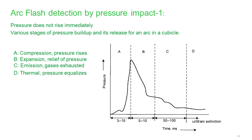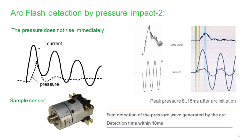The pressure increase in the cell takes some time. On the right-hand side, when we increase the current, the maximum pressure peak comes almost 10 milliseconds after the current waveform. Even manufacturers of pressure sensors dedicated to arc flash detection acknowledge that detection time is around 10 milliseconds. This shows that pressure-based detection is inherently slower.